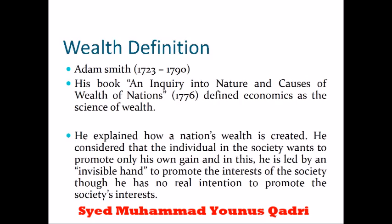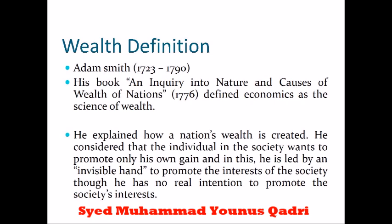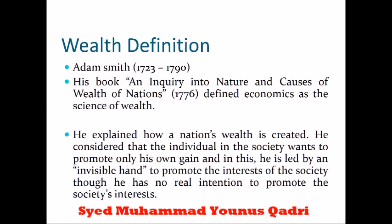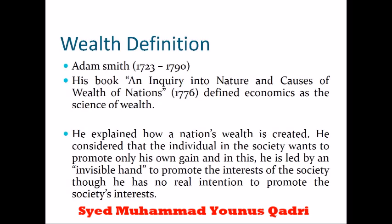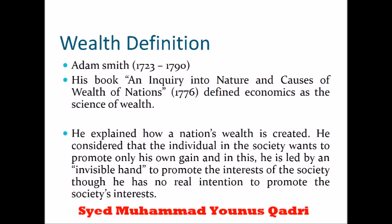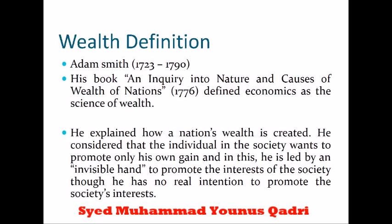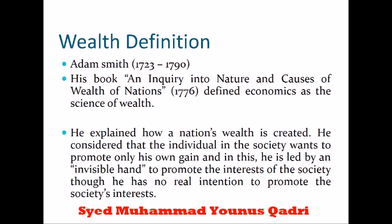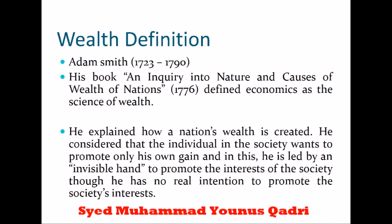Adam Smith is the 18th century economist. He wrote his book, An Inquiry into the Nature and Causes of the Wealth of Nations, in 1776. He is considered the father of economics — in short, his book is called Wealth of Nations. In it, he defined economics as the science of wealth and explained how a nation's wealth is created. He considered that the individual in society wants to promote only his own gain — that is, the individual is self-interested. This is led by an invisible hand to promote the interest of the society, though he has no real intention to promote society's interest.